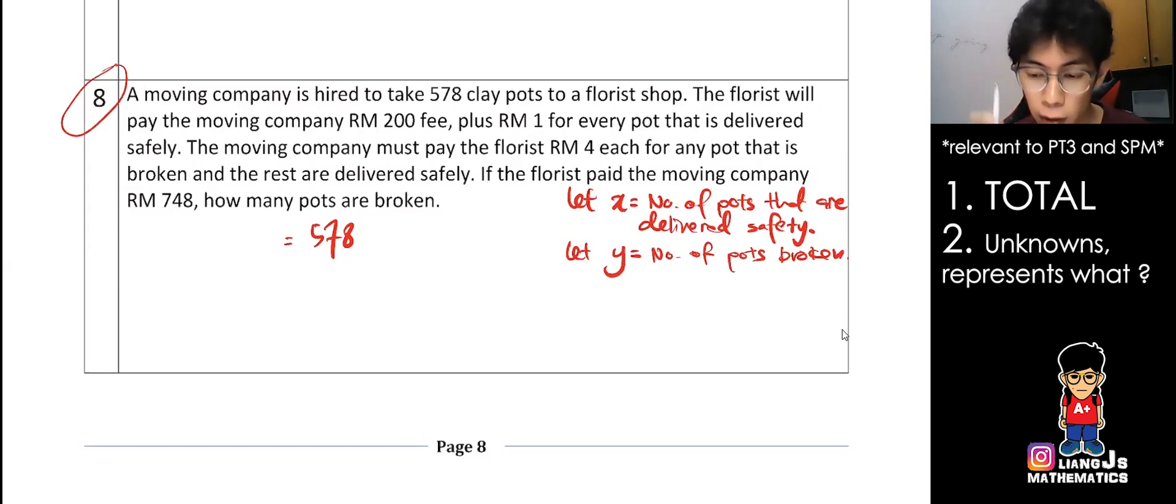I read the whole thing one more time very fast. The florist will pay moving company 200 plus 1 ringgit for every pot delivered safely. The moving company must pay florist RM 4 for any pots which is broken, and the rest are delivered safely. If the florist paid 748 total, the final amount paid. So the thing comes in already. Can you see, this is the price. 200 is the first payment. Every pot delivered safely one ringgit, one times x, but one times x still x, so you plus with x. This is what you have to pay, the florist have to pay. And then, if the moving company breaks any pots, I have to repay 4 ringgit. It means you have to minus off the amount. So I have to minus what? 4 ringgit times any pot broken. So some of you might say, 'Teacher, can I just bring the 200 over?' Yes.